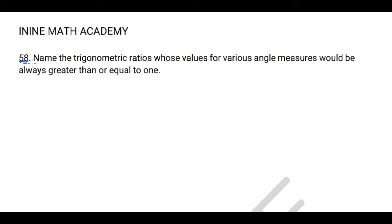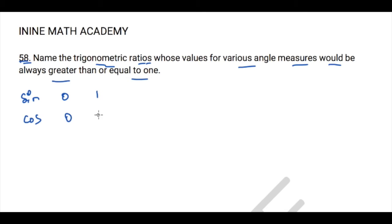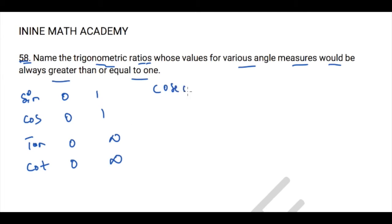Question 58: We need to name the trigonometric ratios whose values for various angle measures are always greater than or equal to 1. Sin and cos range from 0 to 1. Tan and cot range from 0 to infinity. However, cosecant values start from 1 and go up to infinity — they are always ≥ 1. Secant follows the same trend.